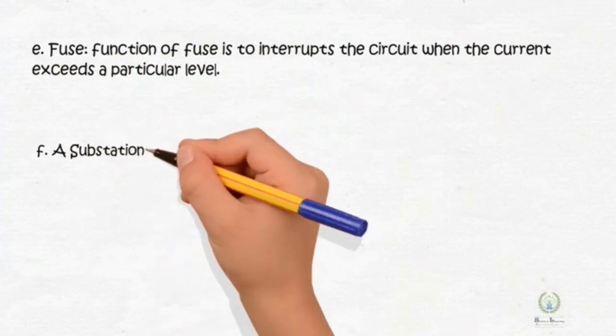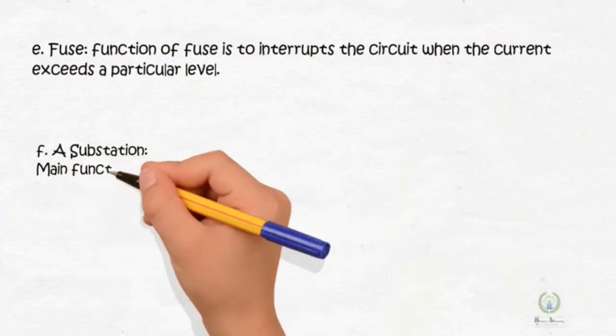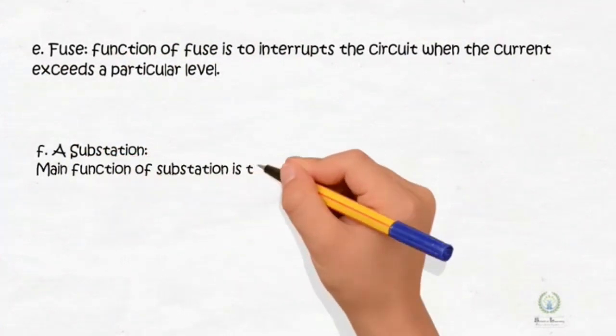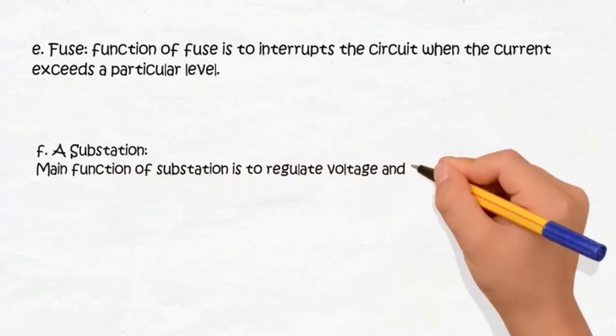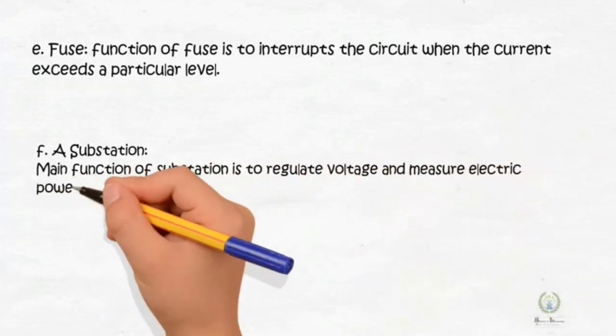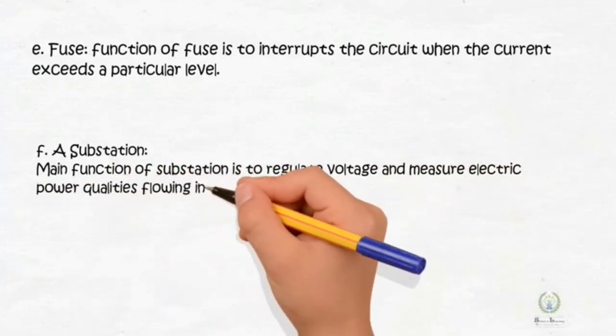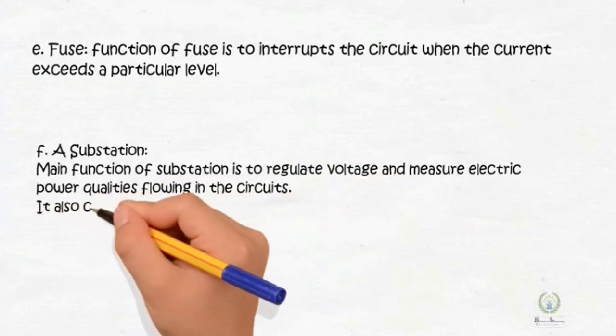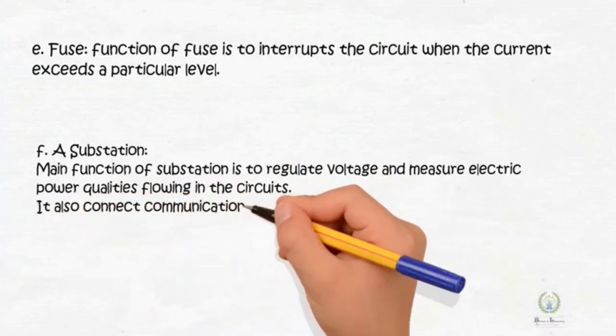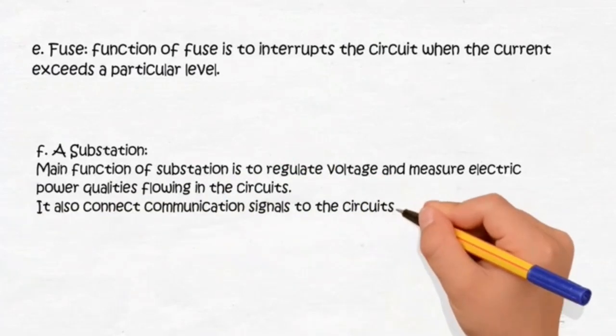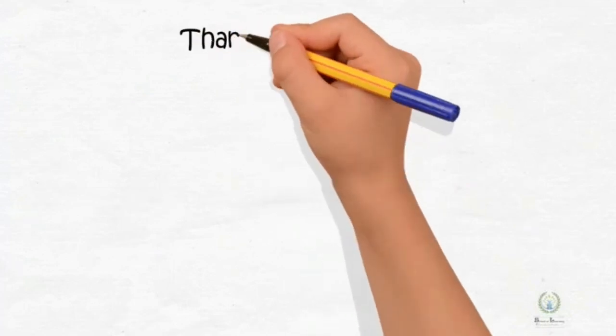F: a substation. Main function of substation is to regulate voltage and measure electric power qualities flowing in the circuits. It also connects communication signals to the circuits.